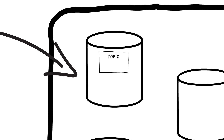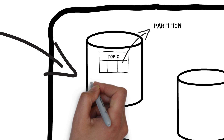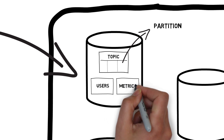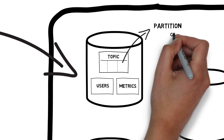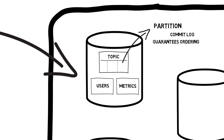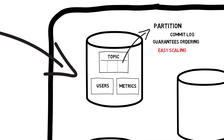Topics provide a way of categorizing data that is being sent, and they can be further broken down into a number of partitions. For example, a system can have separate topics for processing new users and for processing metrics. Each partition acts as a separate commit log and the order of messages is guaranteed only across the same partition. Being able to split a topic into multiple partitions makes scaling easy, as each partition can be read by a separate consumer, allowing for high throughput across multiple servers.